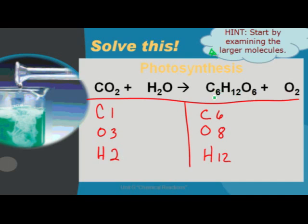If I look at the first element, it's carbon. I have one in the reactants and six in the products. So I'm going to want six more carbon, or I want six carbons total. So I'm going to multiply my first chemical, which is carbon dioxide, by six, getting six carbon and changing our number of oxygen.